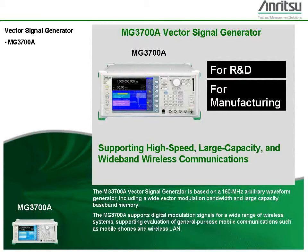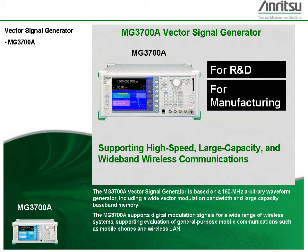The MG3700A vector signal generator is based on a 160 MHz arbitrary waveform generator, including a wide vector modulation bandwidth and large capacity baseband memory. The MG3700A supports digital modulation signals for a wide range of wireless systems, supporting evaluation of general-purpose mobile communications such as mobile phones and wireless LAN.